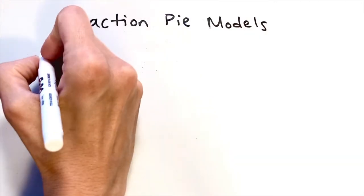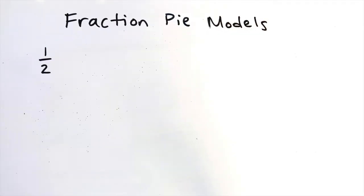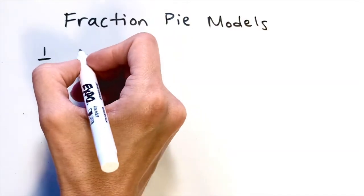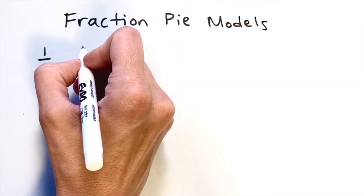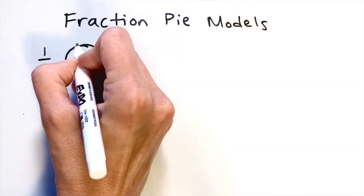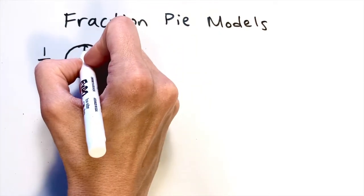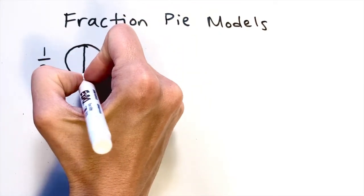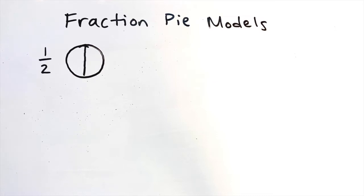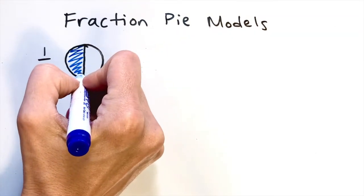Now let's take a look at using fraction pie models. Pie models are drawn using circles. To draw one half, I'll start by drawing a circle and then draw a line down the middle to cut my circle in half. There — one half.